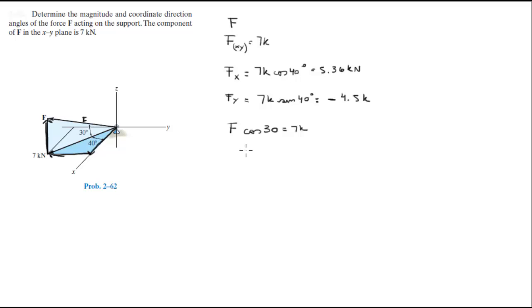So F cosine 30 equals 7kN, this equation right here. So now we got F, now we need to find this Fz,